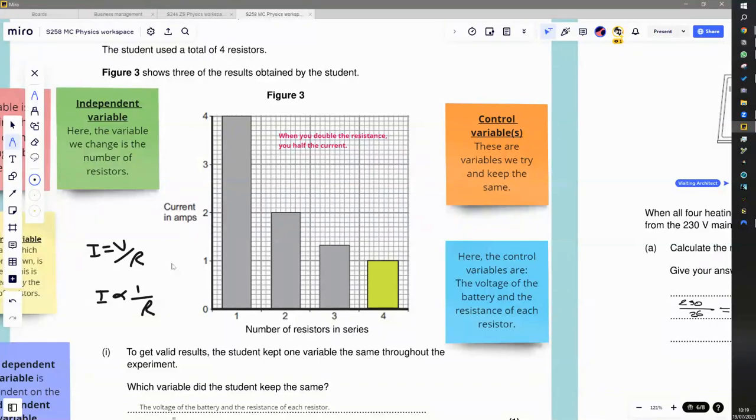So we use that idea to predict the last one. When we go from 2 to 4, again we've doubled the resistance, so we're going to half the current. The current goes from 2 to 1. Or if we like, when we go from 1 to 4, we have quadrupled the resistance, so the current is going to be one quarter of what it was originally.